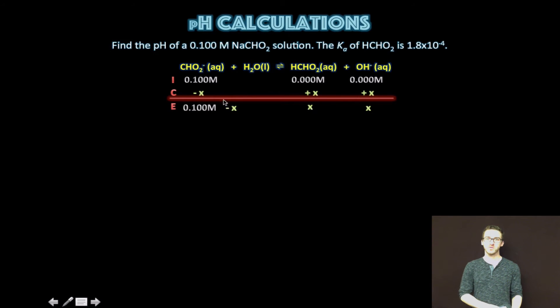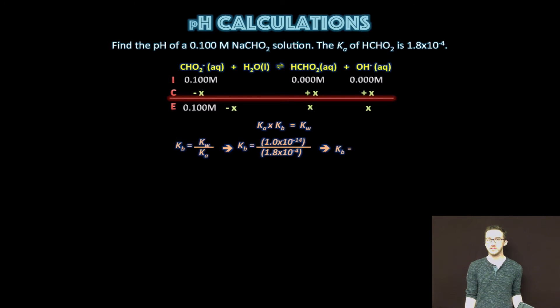Now, the first thing to do is recognize the formate ion is acting as a weak base. It's creating additional hydroxide ion. And we're given Ka of formic acid. So the first thing we need to do is take our expression for Kw and solve it for Kb. Now, we need to remember that we can rearrange the equation to solve for Kb. And keep in mind that the value for Kw is 1.0 times 10 to the minus 14. Simply dividing that by our Ka value, 1.8 times 10 to the minus 4, will give us our value for Kb, which is 5.6 times 10 to the minus 11.